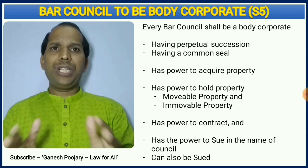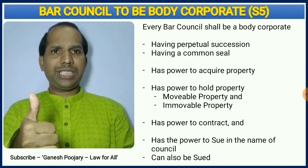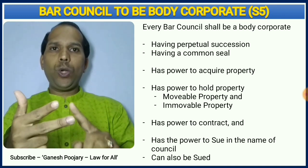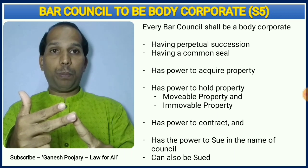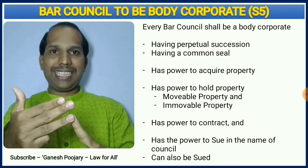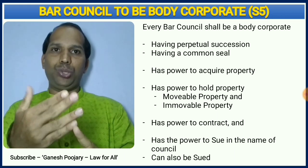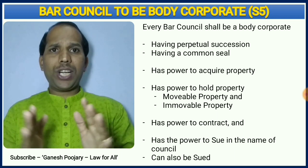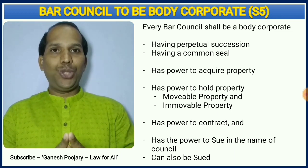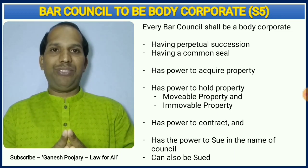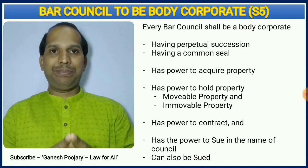Now these are the keywords you have to mention: perpetual succession, common seal, hold and acquire movable and immovable property, they can enter into contracts, and they can sue and can be sued. If you are writing these five aspects, it is like you have covered everything. That's how section 5 is read.